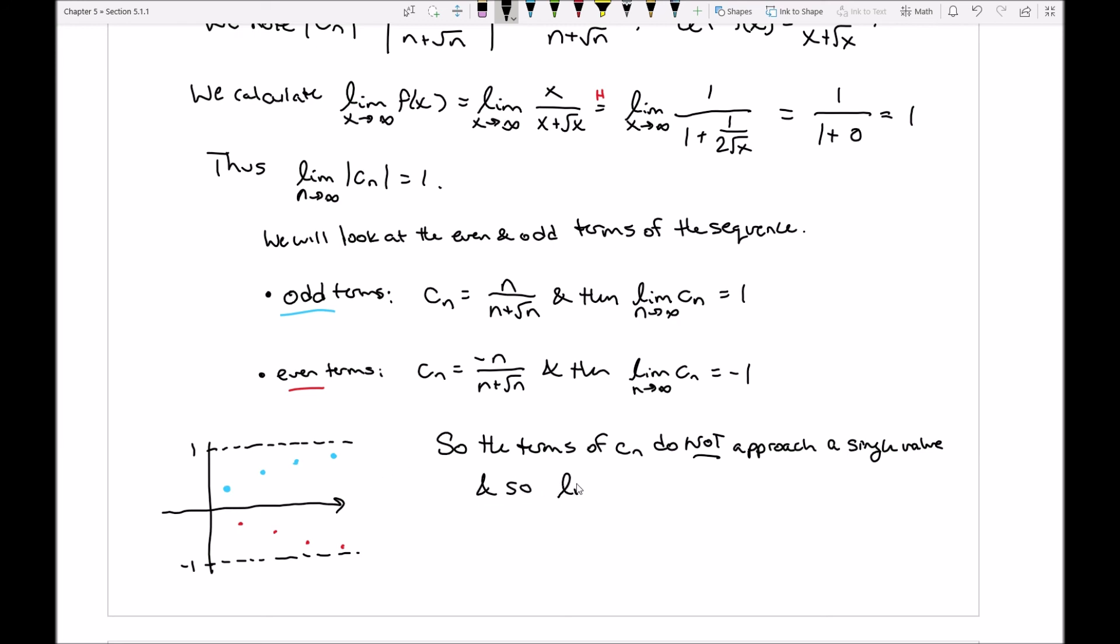And so the limit of c sub n does not exist. And if the limit of c sub n does not exist, that automatically means c sub n is divergent.